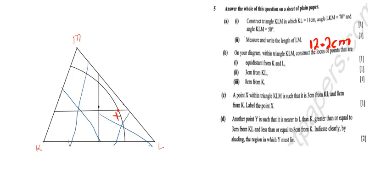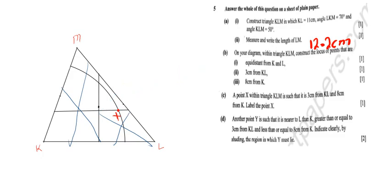Anything outside the arc is greater than 8 cm from K, and anything inside is less than 8 cm. So the region for Y is bounded by: the L side of the bisector, above the 3 cm parallel line, and inside the 8 cm arc. I shade that region in green to clearly indicate where Y must lie.